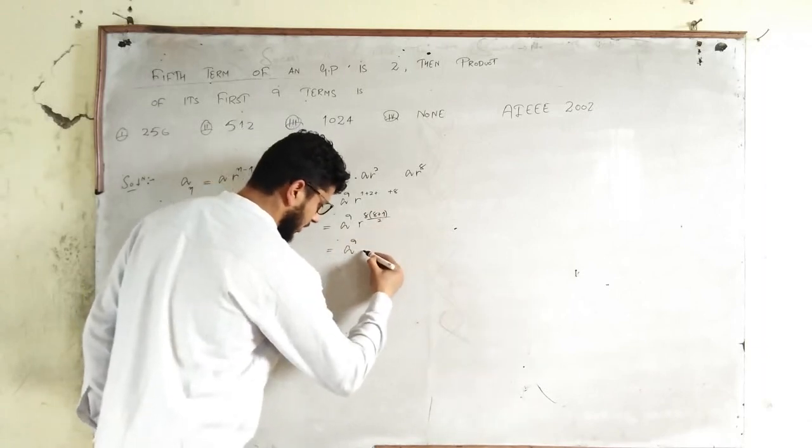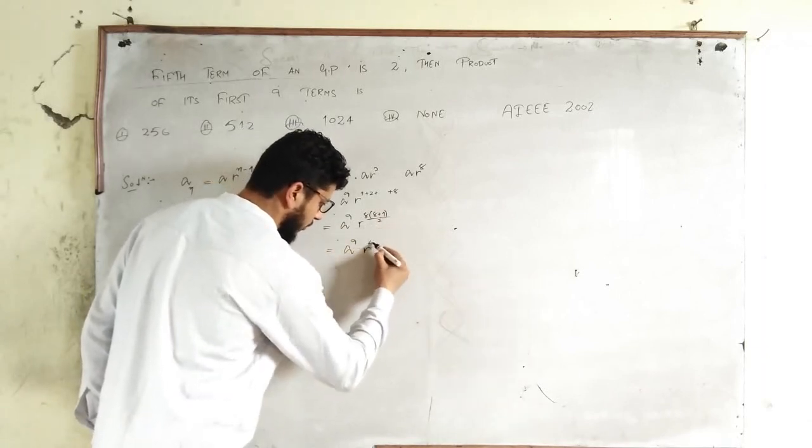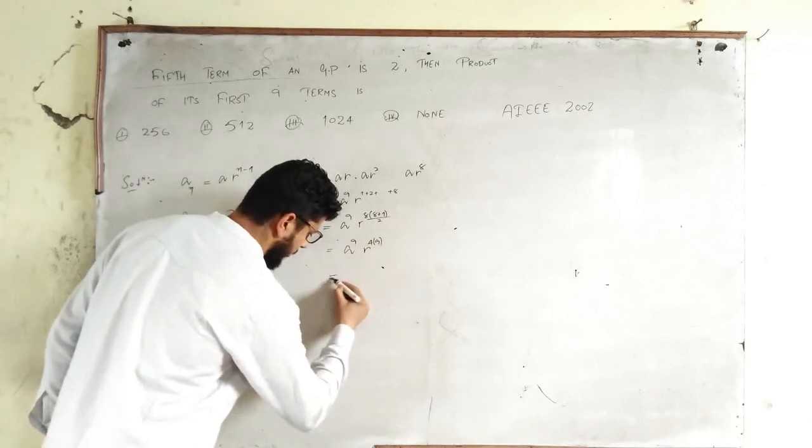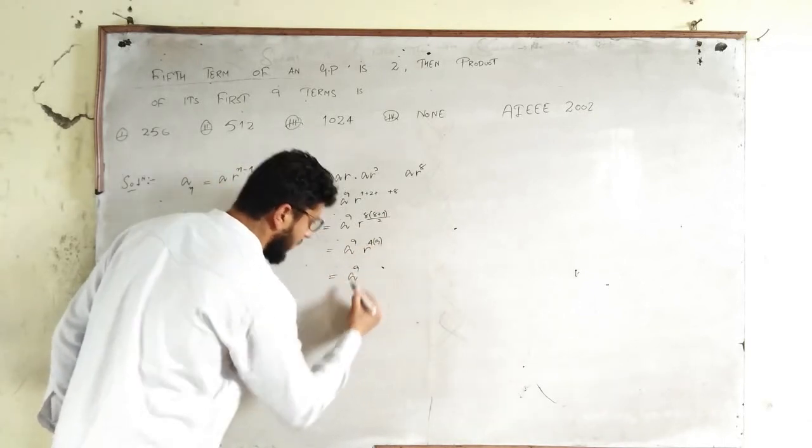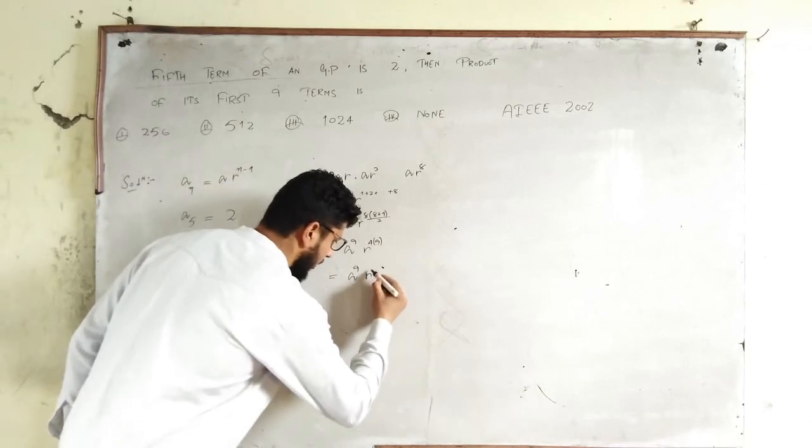Then it's R^(4×9), which gives A^9·R^36.